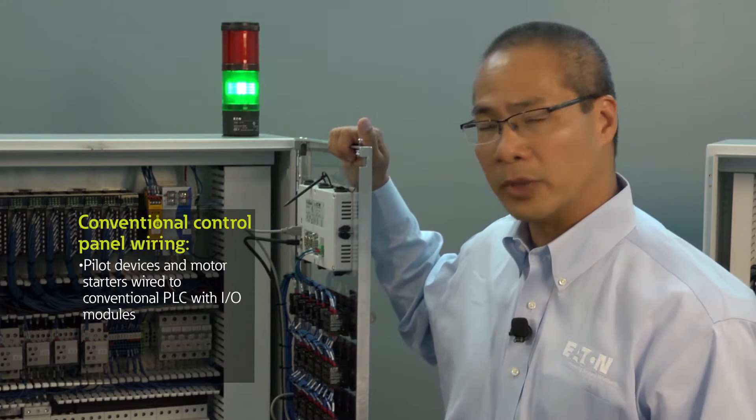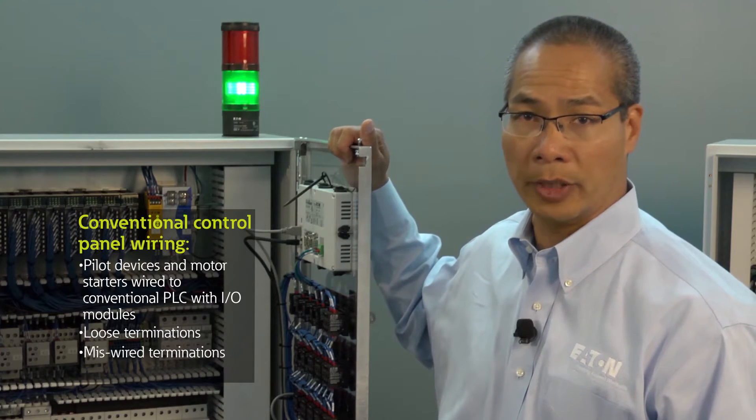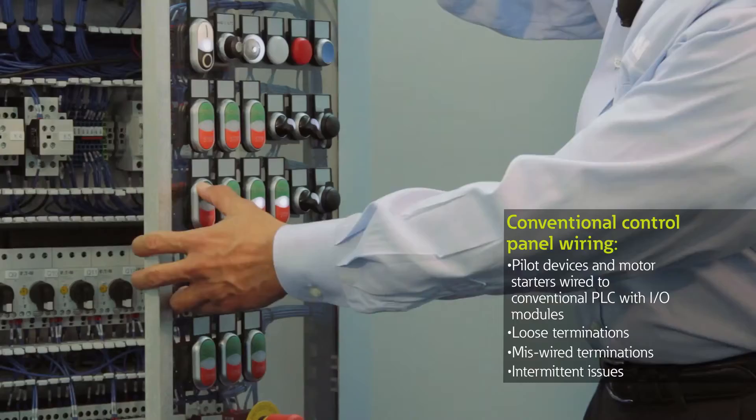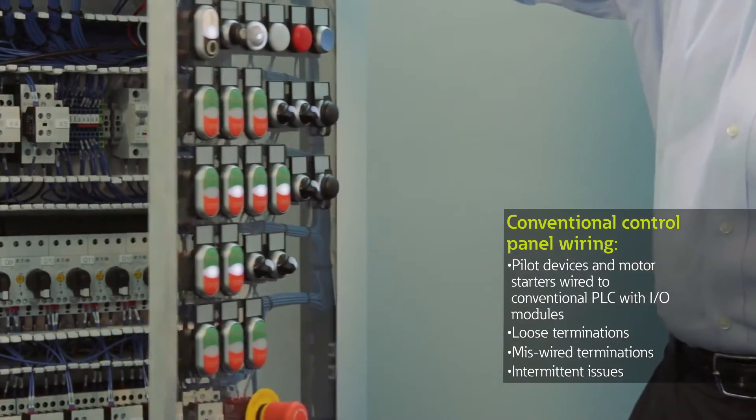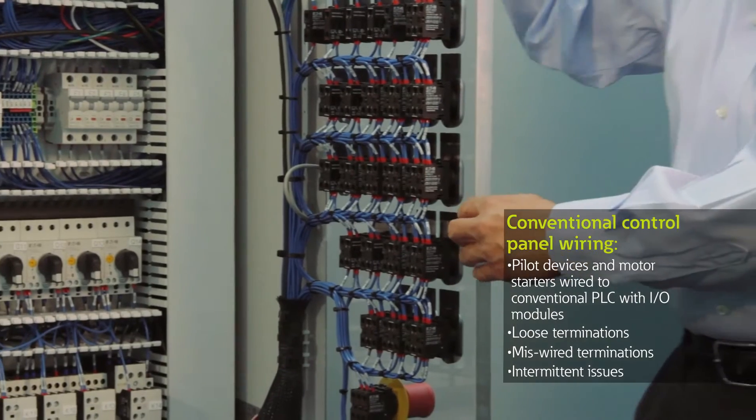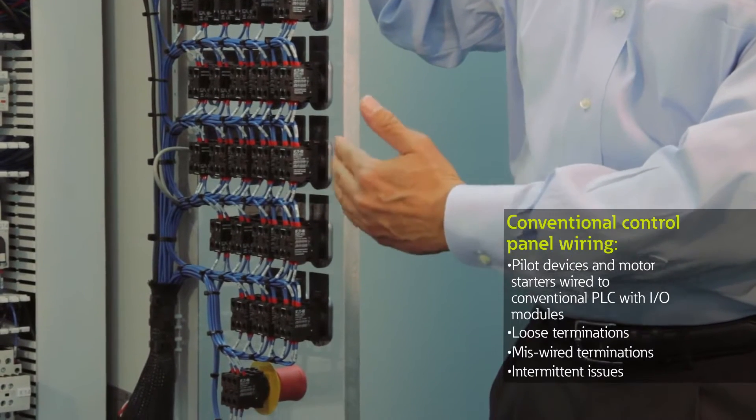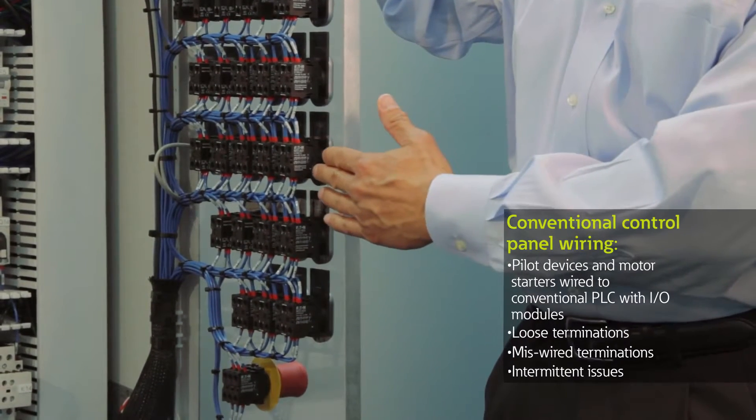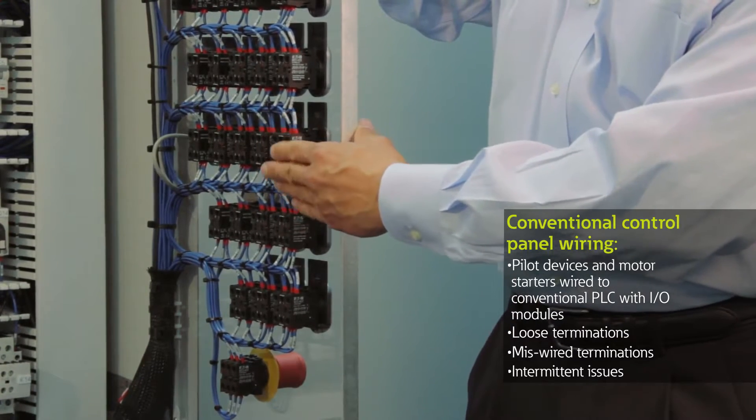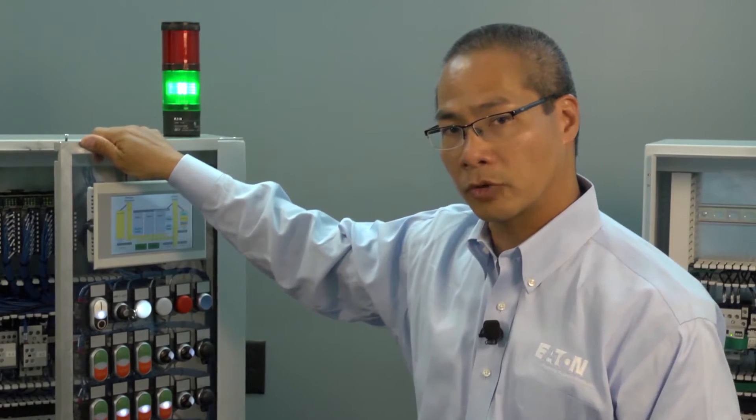We still have some problematic areas. We can have loose terminations, miswire terminations, and sometimes intermittent issues. As an example, on this particular control panel, I was demonstrating this and noticed that this light was flickering. What we later learned was that the wire was actually wired to the wrong side of the saddle clamp on the push-button contact block, but it was held in place very tightly because of the wire bundling. That sort of intermittent issue can be very time consuming to troubleshoot and identify.